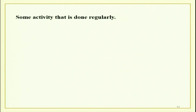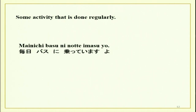There is something else that you can do, which is some activity that is done regularly — this is something new. For example, mainichi basu ni notte imasu — it means that mainichi, every day, I ride a bus. The meaning would be I take a bus every day, that I travel by bus practically every day. Something that you do regularly, something that is a habit, a habitual action — that is what you show with the imasu form.